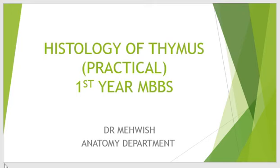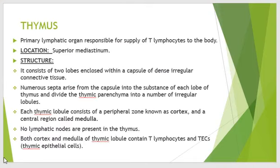Today the topic of histology practicum is the thymus. The thymus is a primary lymphatic organ responsible for supplying T lymphocytes to the body. It is located in the superior mediastinum and consists of two lobes enclosed within a capsule of dense irregular connective tissue. Various septa or trabeculae arise from the capsule and divide the parenchyma into irregular lobules. Each thymic lobule consists of a peripheral zone called the cortex and a central region called the medulla. Lymphatic nodes are not present in the thymus.